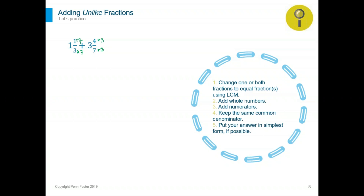Now multiply times three on the top. Whenever you multiply a denominator times a factor, you have to do exactly the same thing on the top. Remember, we are not going to multiply the seven or the three times the one or the three — the one and the three are whole numbers. They are part of the mixed number but not part of the numerator or denominator. So our new problem will be rewritten as one and seven over 21 plus three and four times three is 12 over 21.